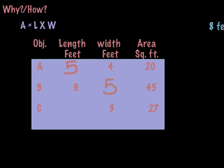Let's take a look at our last one — shape C. Our width is 3 and our area is 27. So I'm thinking in my head: 27 divided by 3, or 3 times what equals 27? And hopefully you figured out that that is 9.